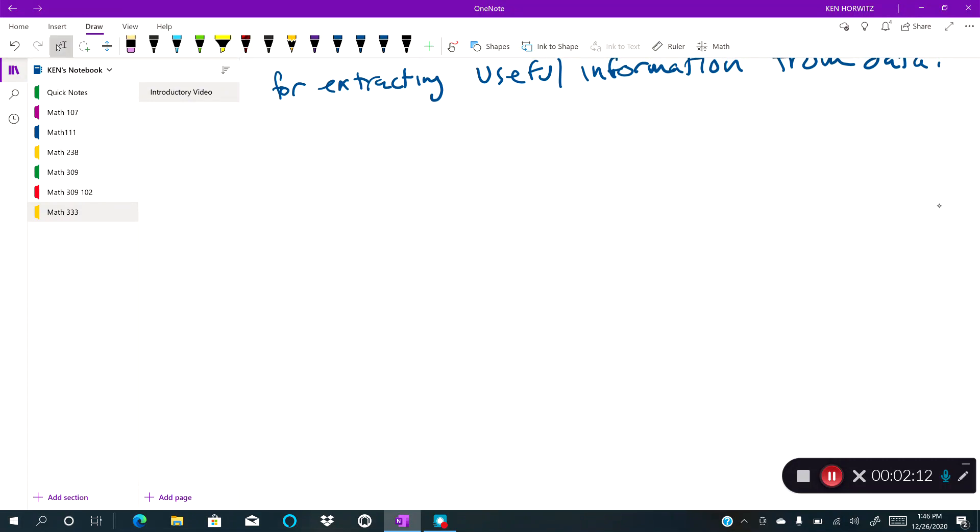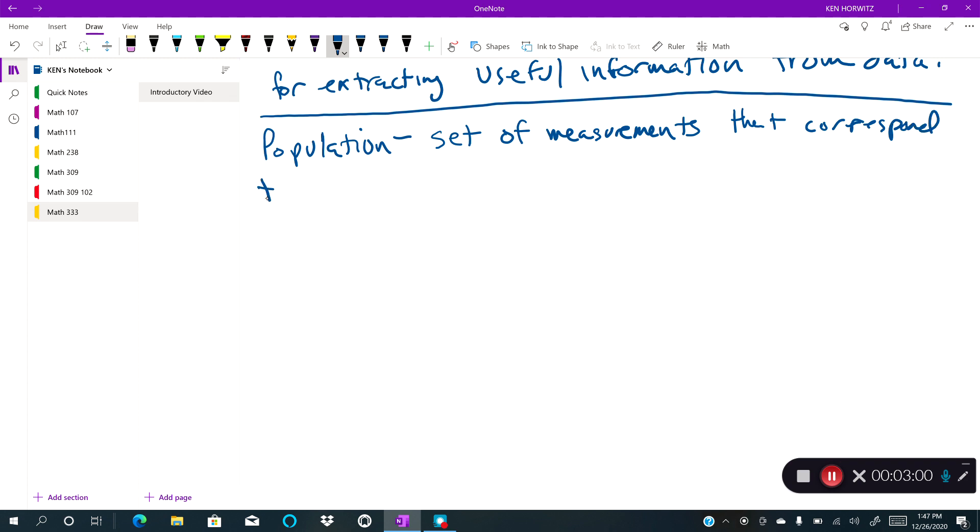So let's start with the term population. The term population is, whatever measurement you have, it corresponds to all the elements, period. Not just in that set, so we can say a set of measurements that correspond to all the elements.